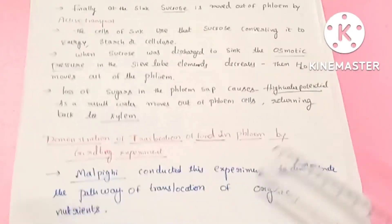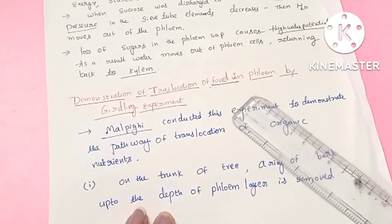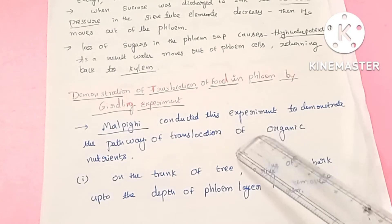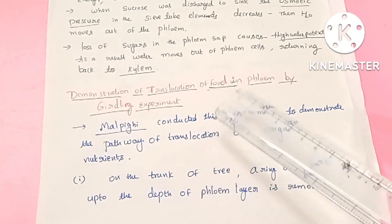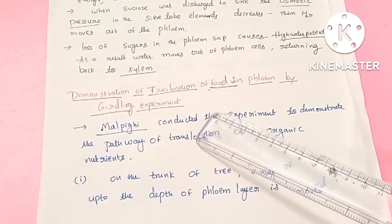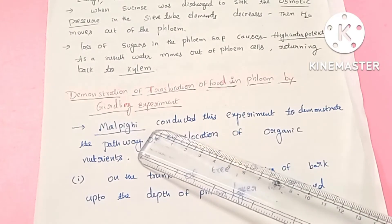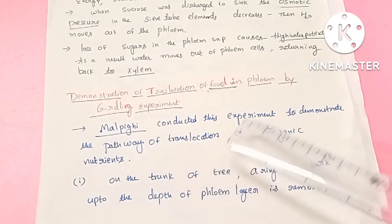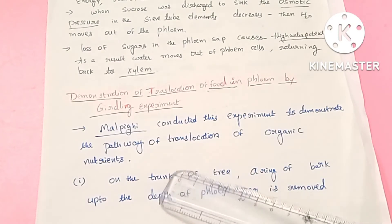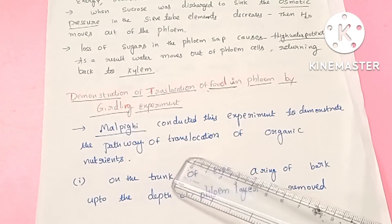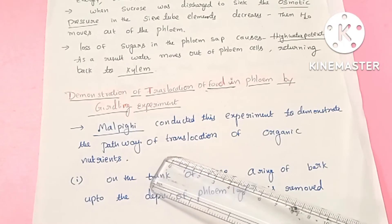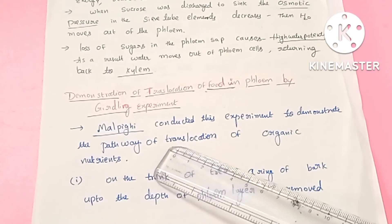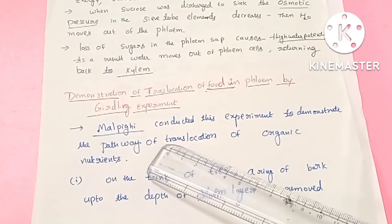Next, the demonstration of translocation is the girdling experiment, also called the Malpighi experiment. This experiment is conducted to demonstrate the pathway of translocation of organic nutrients, and to identify the tissue responsible for that transport.